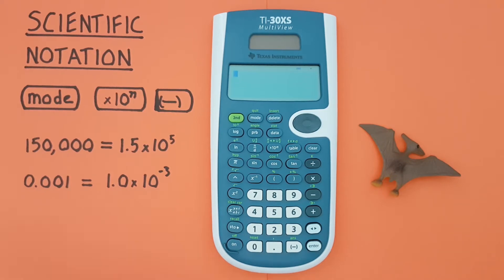To do that we'll use the mode key that looks like this located here, the x10 to the power of key that looks like this located here, as well as the negative sign that looks like this located down here. And it's important to distinguish this is not the same as the subtraction key, that's this one here, we want the negative key down here.